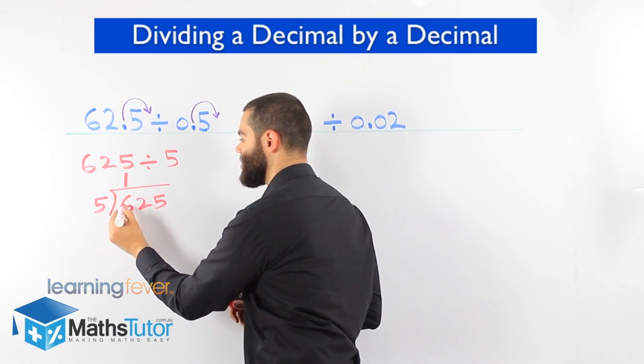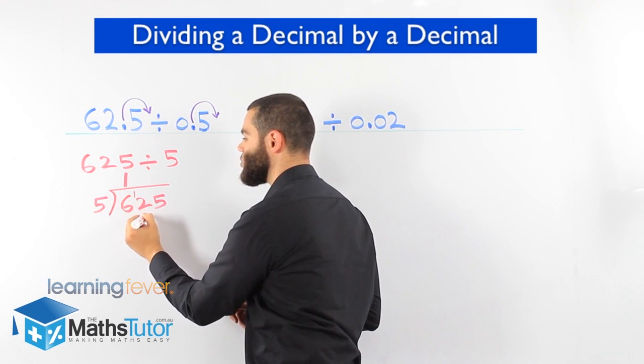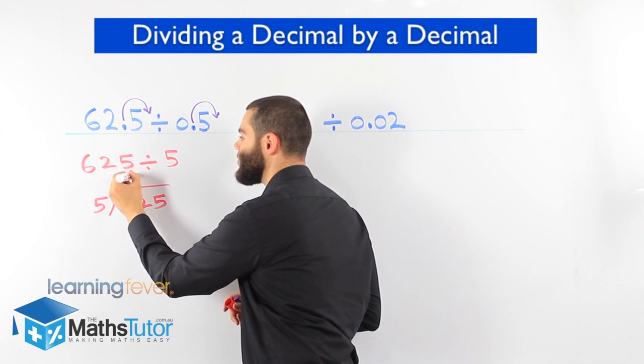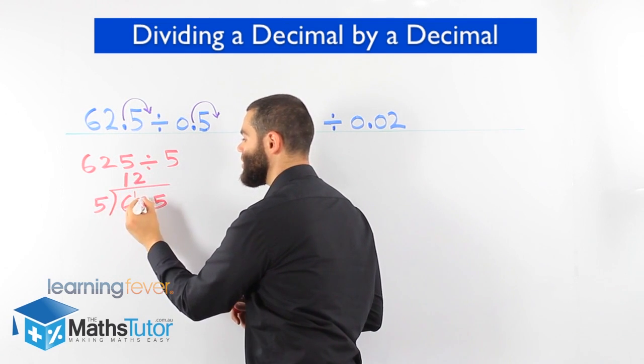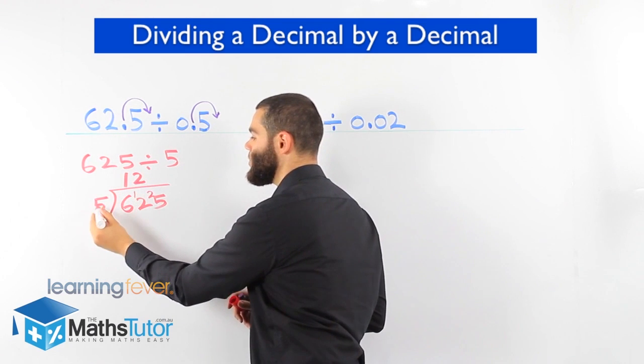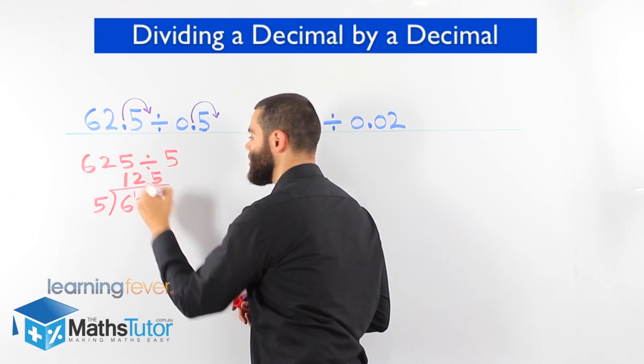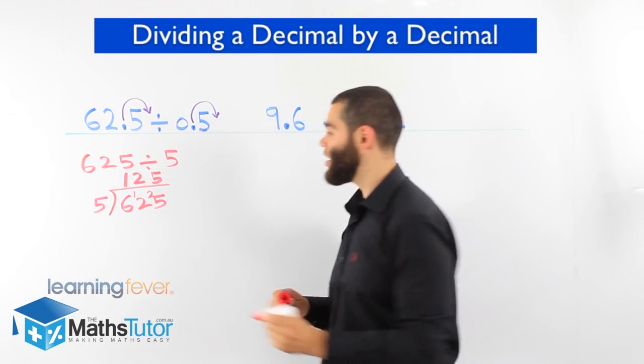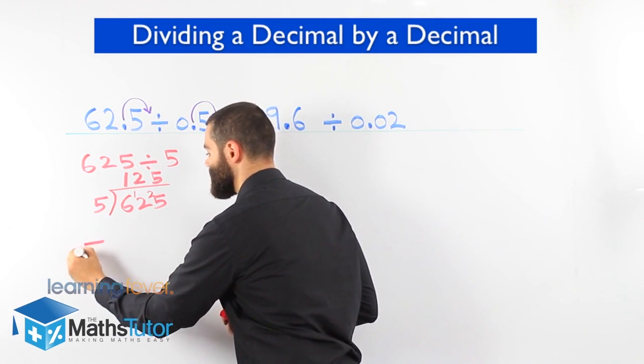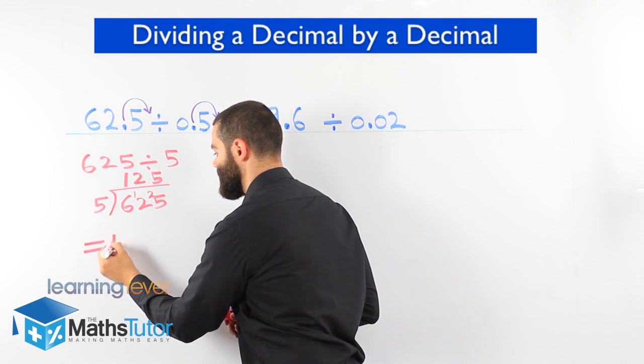How many fives? Because there's a remainder of 1 now. How many fives go into 12? 5 goes into 25 five times. So our answer is 125.